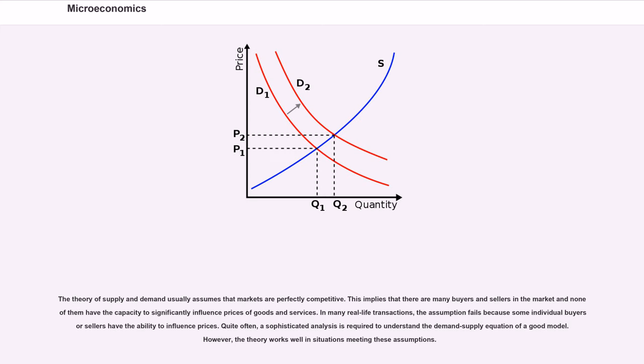The theory of supply and demand usually assumes that markets are perfectly competitive. This implies that there are many buyers and sellers in the market and none of them have the capacity to significantly influence prices of goods and services.